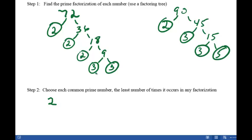Now we come to the next factor. The factor 3 occurs 2 times in the factorization of 72, and also 2 times in the factorization of 90. So the least number of times it occurred was 2 times. So we write down 2 factors of 3.